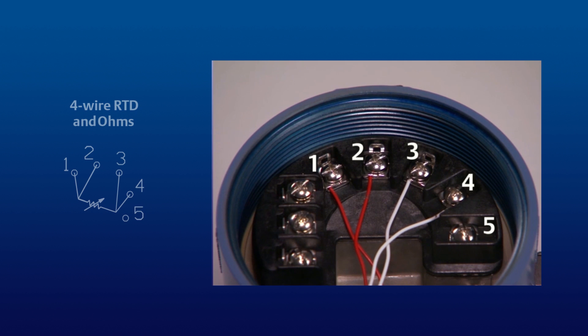Last, here is the correct wiring configuration for a 4-wire RTD sensor. Note that the sensor's two red wires are connected to terminals 1 and 2 and the two white wires are attached to terminals 3 and 4.